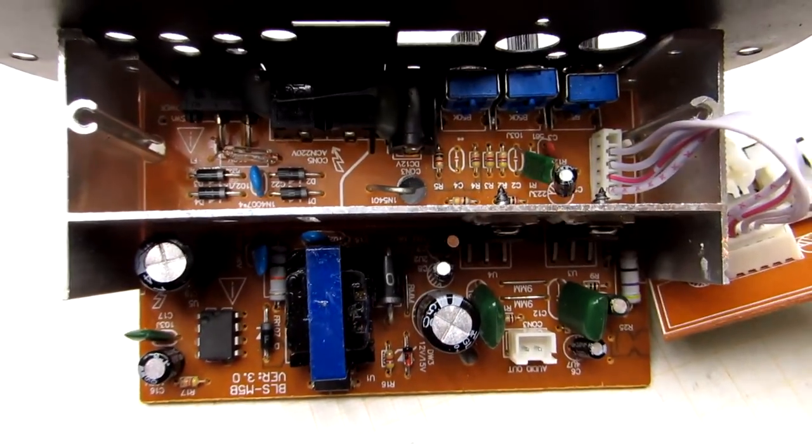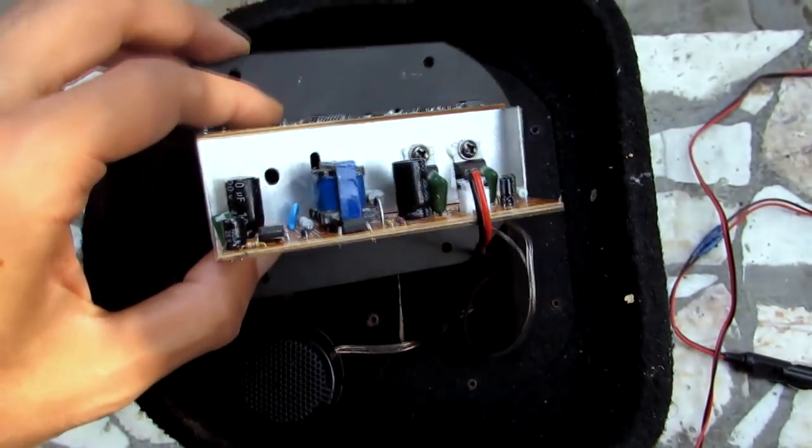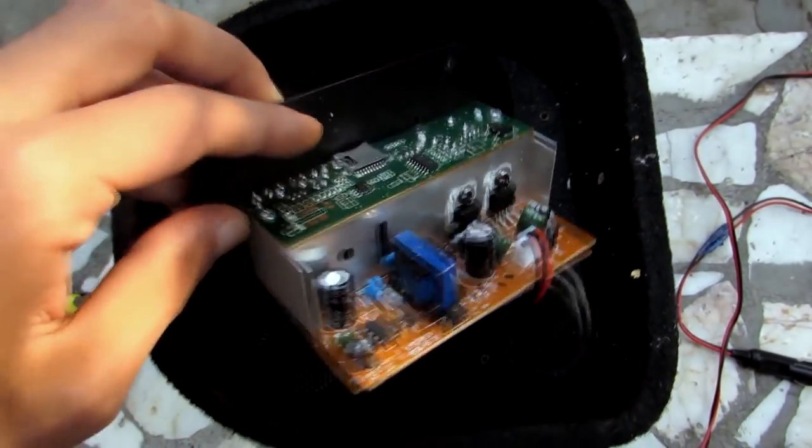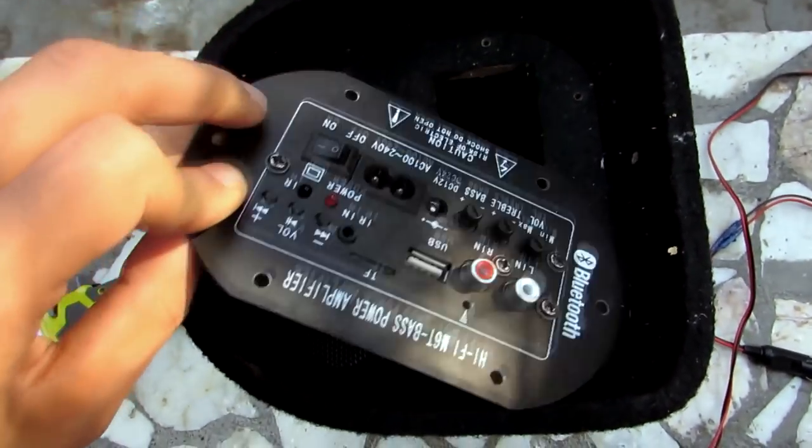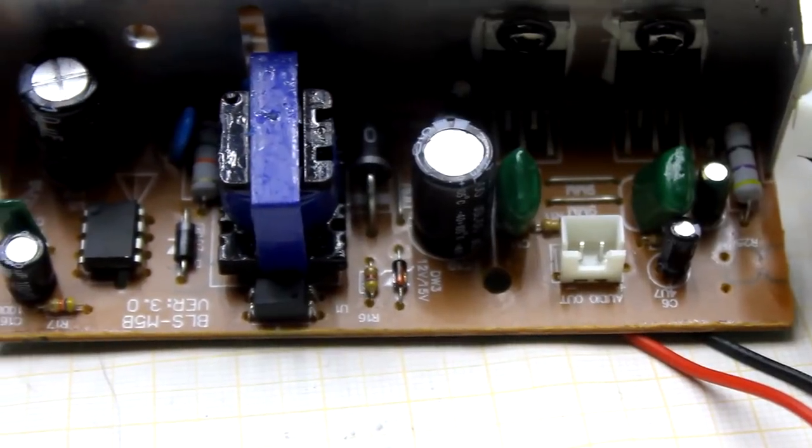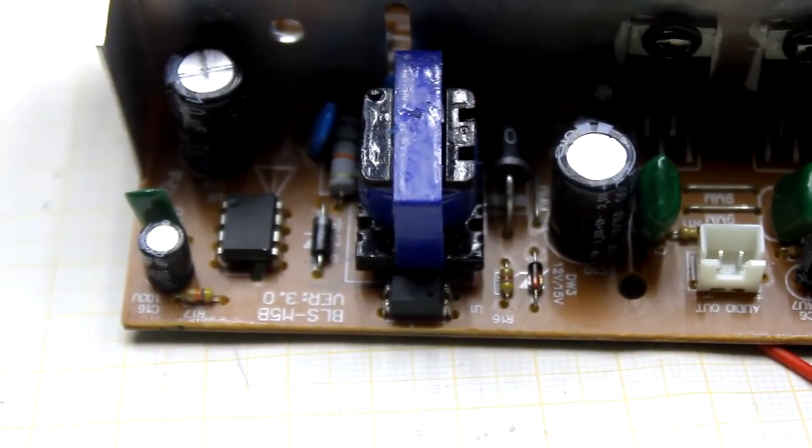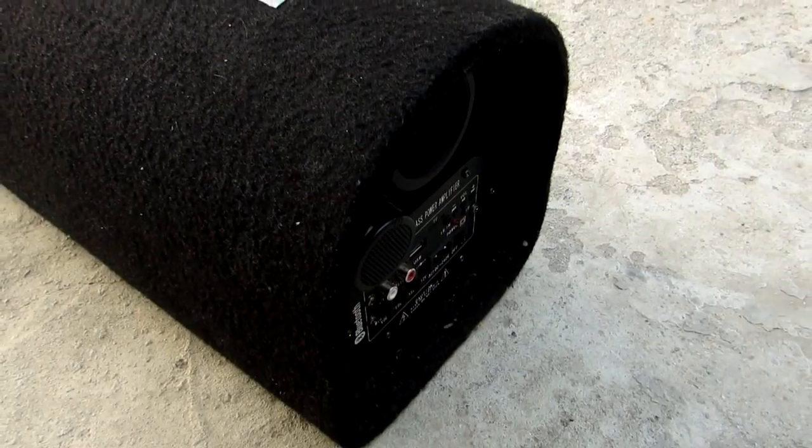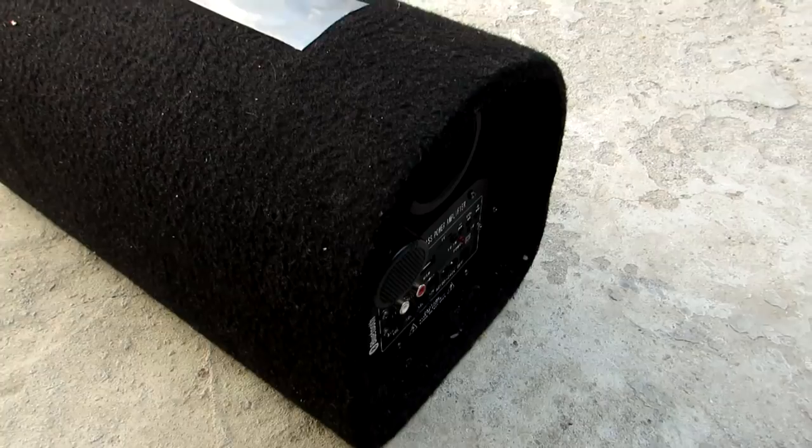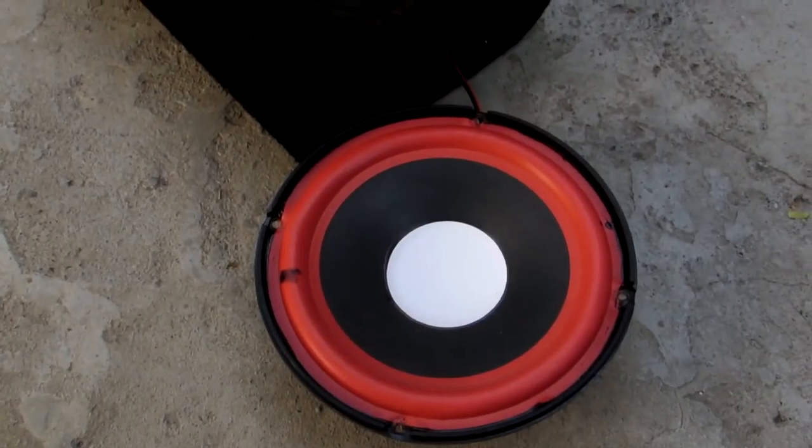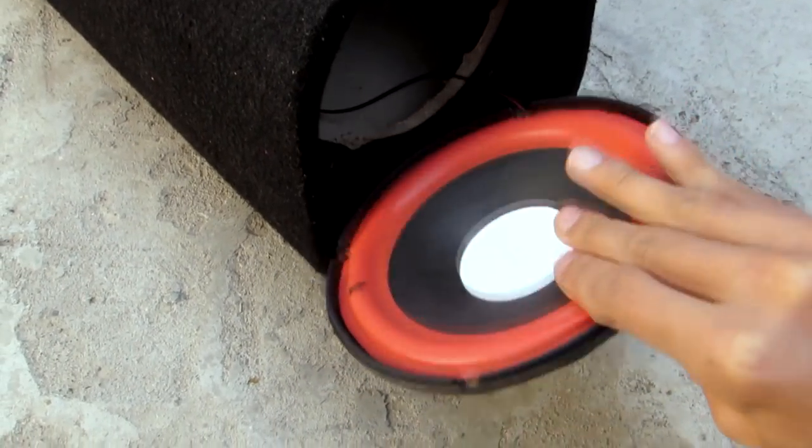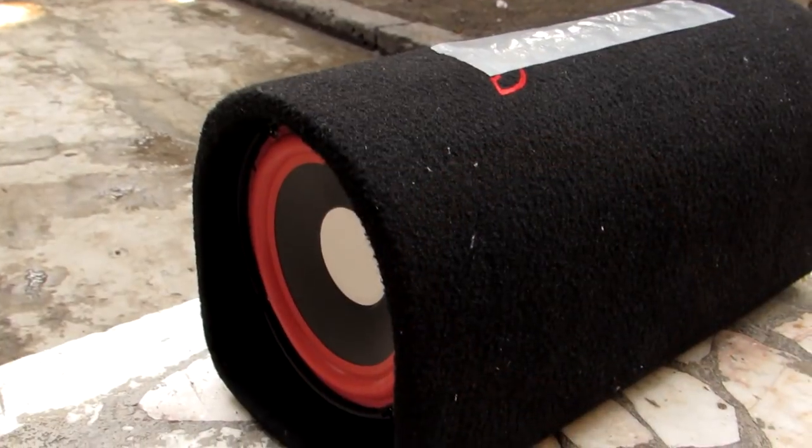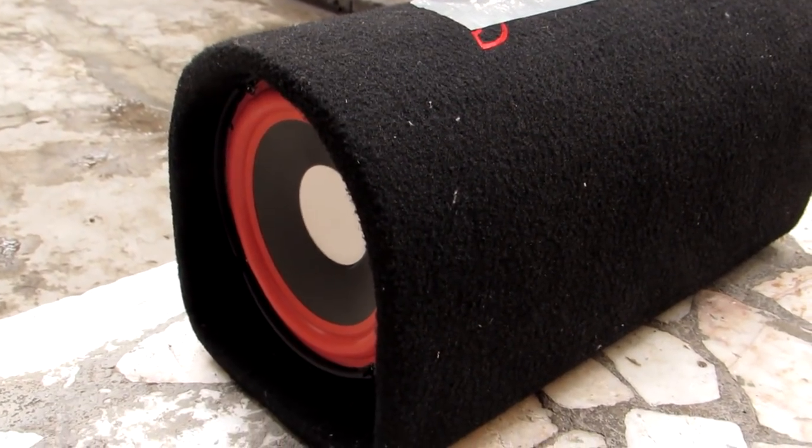There are two options for increasing the output power. First option is to throw out the entire stuffing and assemble a normal amplifier. This option is the most humane, but it will cost more than the subwoofer itself. We will have to make a normal amplifier with a bipolar power supply, a converter to it, and a normal filter unit. And after that it will most likely be necessary to replace the dynamic head, since it is no more than 20 to 30 watts.